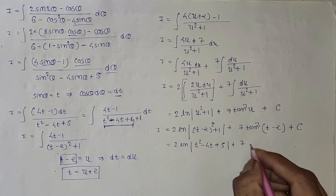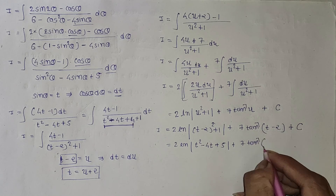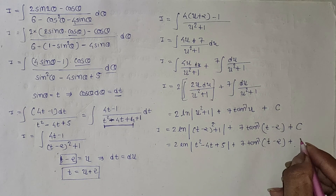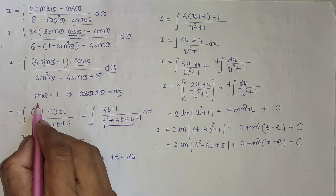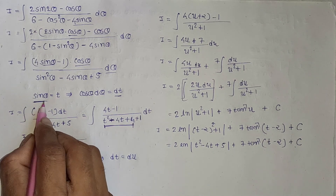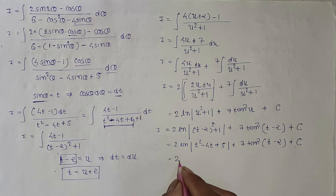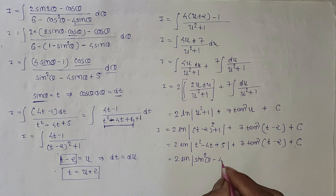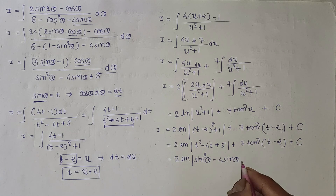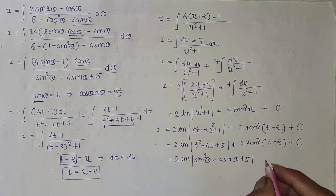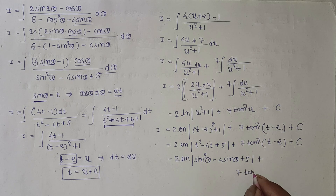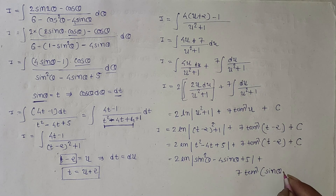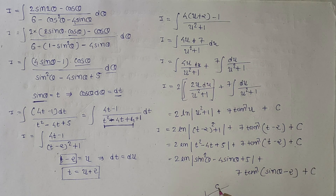And finally, put t equal to sine theta. So the final answer is 2 ln of sine squared theta minus 4 sine theta plus 5, plus 7 times arctan of sine theta minus 2, plus c. And that is the answer.